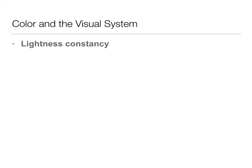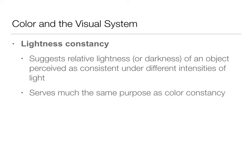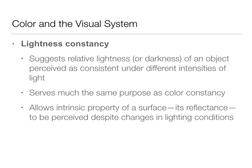The other thing we have in the visual system is lightness constancy — the idea that the relative lightness or darkness of an object is consistent even under different intensities of light. This serves the same purpose as color constancy: it helps us organize our perceptual system, make sense of the world around us, and allows an intrinsic property of a surface to remain the same. It allows us to see that your red binder is red whether you're in your dark bedroom or outside in bright light — it's still the exact same color red, even though the lighting around it changed.